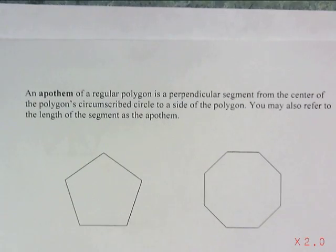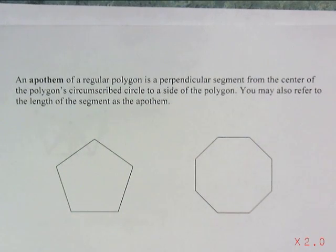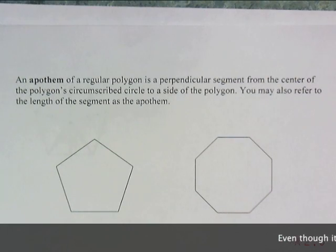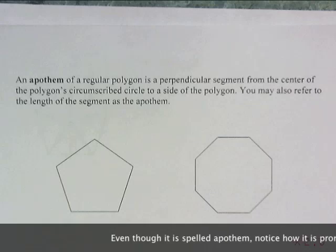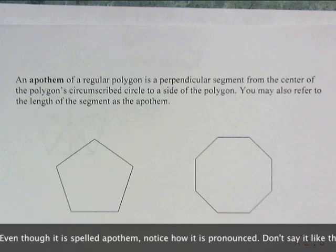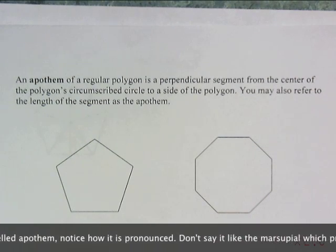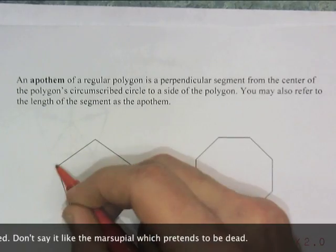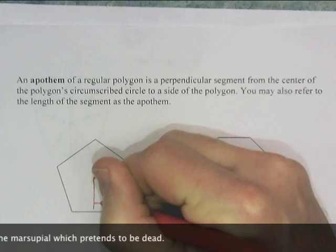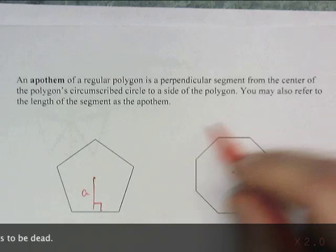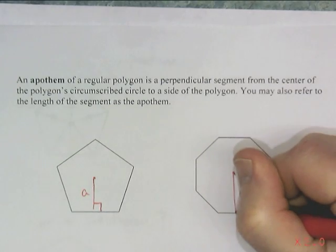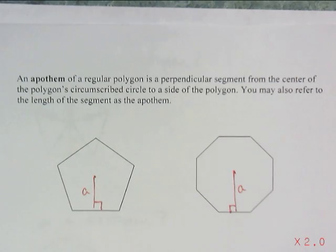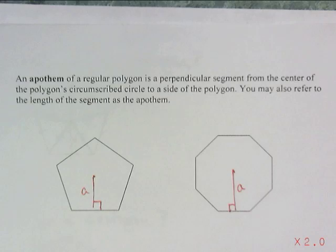The apothem of a regular polygon is a perpendicular segment from the center of the polygon circumscribed circle to a side of the polygon. You may also refer to the length of the segment as the apothem. So, like circumference, the apothem is the length of that segment, and it also is that segment. So, it goes from the center of the circle that would go around, perpendicular to the side. There's the apothem. From the center of the circumscribed circle to perpendicular to a side. That's the length I need to give you.